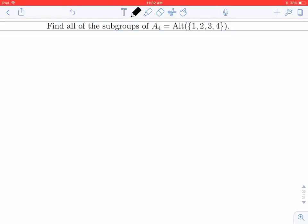Hi again, everybody. In this video, we're going to try to find all the subgroups of A4. So you remember that A4 is the alternating group on the set containing the numbers 1, 2, 3, and 4. And the alternating group just consisted of the even permutations.